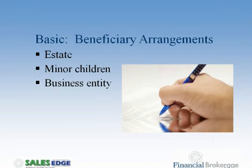Another common mistake with beneficiary arrangements is naming minor children. People often want to name minor children — usually as contingent beneficiaries — and that's generally not a good thing either. Each state has its own age of majority at which a child can receive and take full control of the money. Prior to that, it's up to the courts. They'll decide who handles the money and how much the children receive. It makes far more sense to put down a trusted family member or have a trust set up ahead of time. You don't want the courts deciding how and when your children get the money.